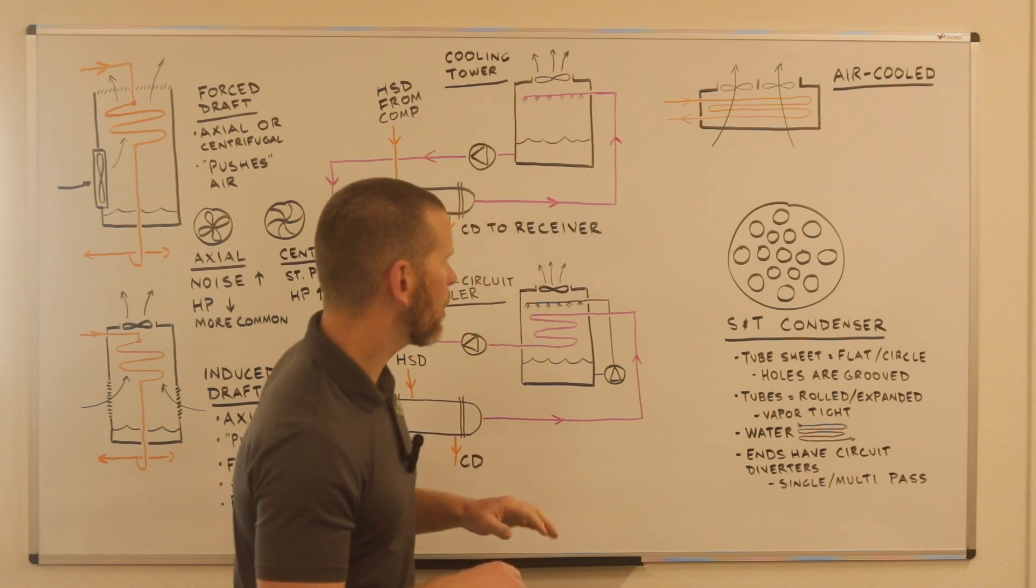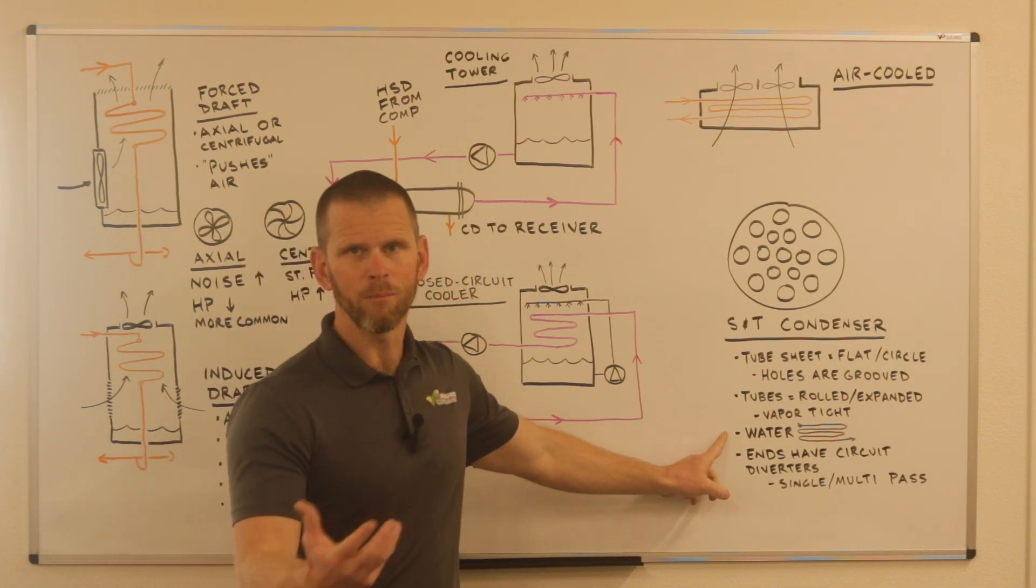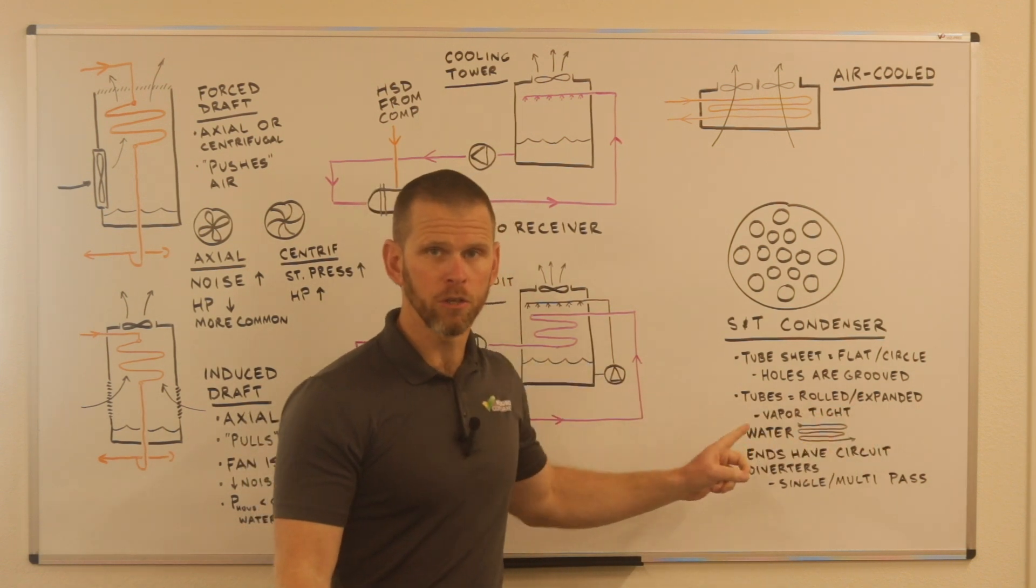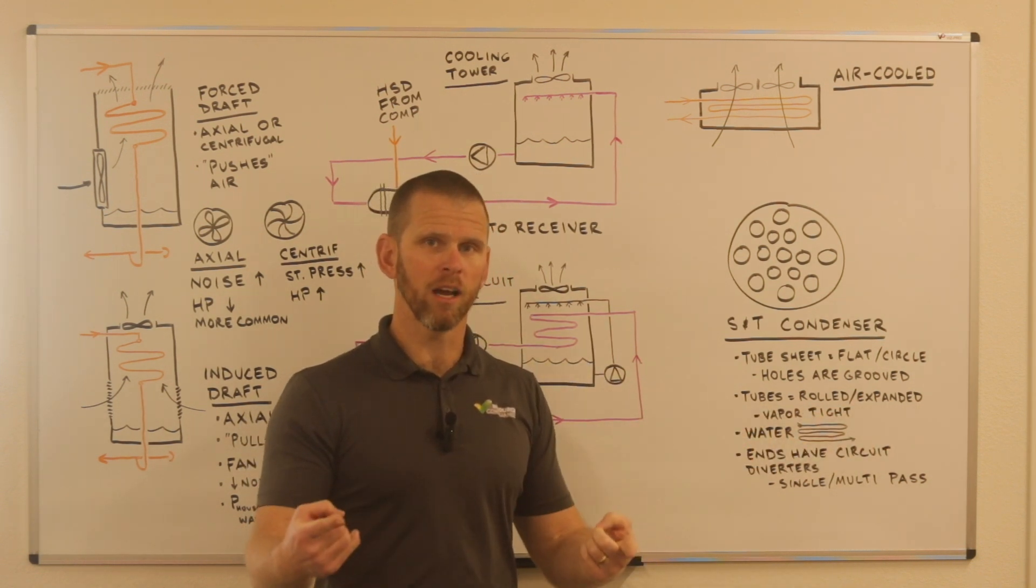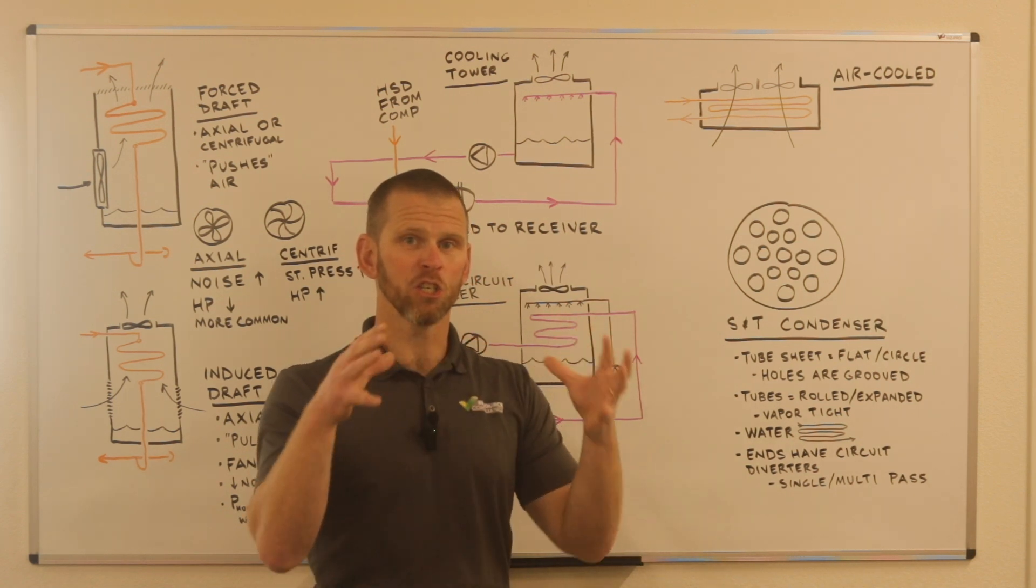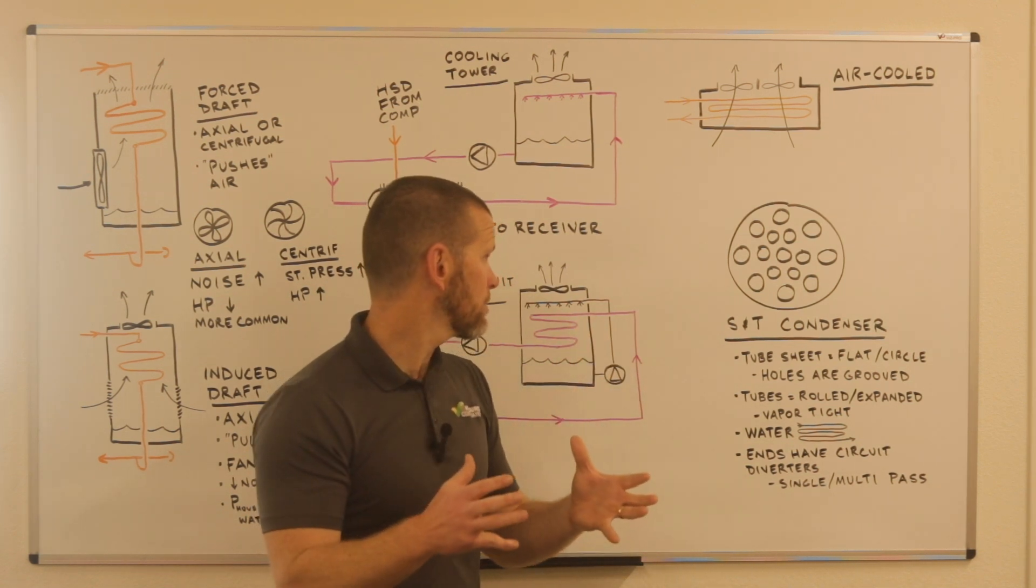Now with a shell and tube condenser, water or the cooling medium, water glycol mixture is what flows through the tubes. That means that the ammonia or the refrigerant that's being used is what is then in the shell or surrounding the tubes.